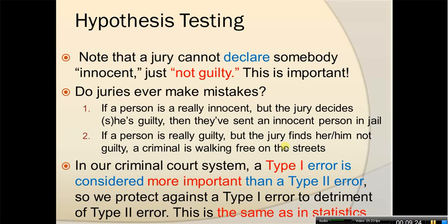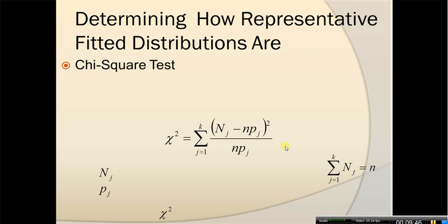The type 1 error is at significance level alpha, while type 2 error relates to the power of the test. We are not as worried about type 2 error as we are about type 1 error. To determine the goodness of fit, we have several tests, and one of them is the chi-squared test. It allows us to figure out the goodness of fit through hypothesis testing. The hypothesis is that the fitted distribution represents the data well, and the alternative is that it does not.